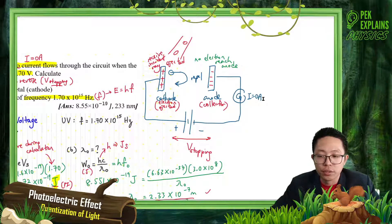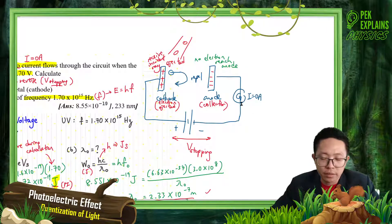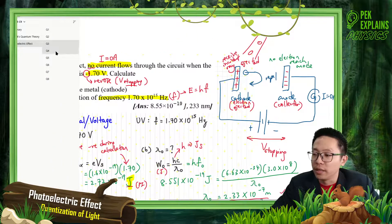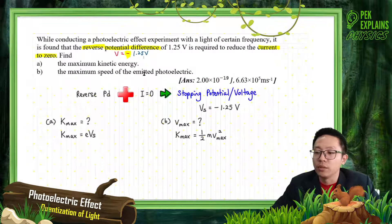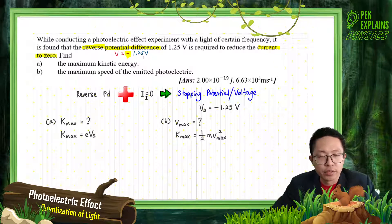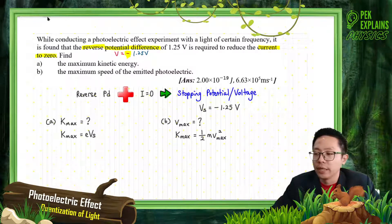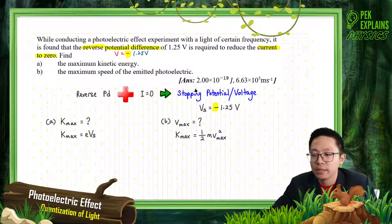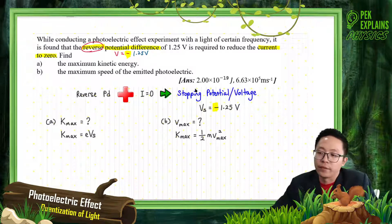When current equals 0, it happens at stopping voltage. So reverse potential difference plus current equal to 0 means stopping voltage — stopping potential. The stopping voltage normally has a negative sign. Negative sign means reverse.